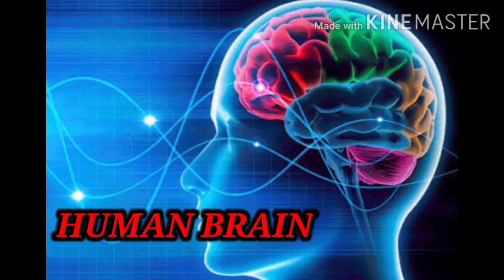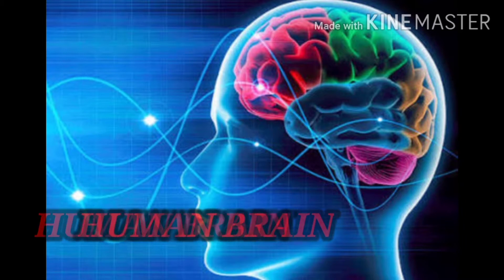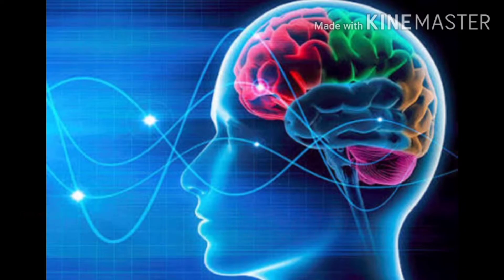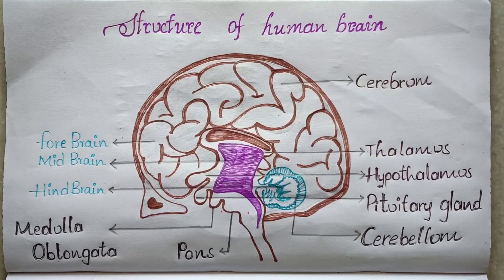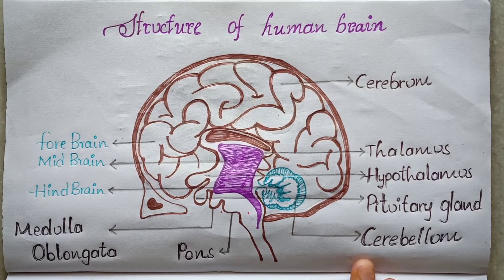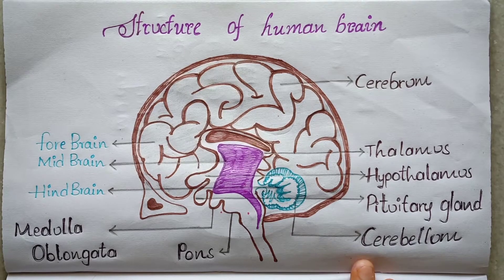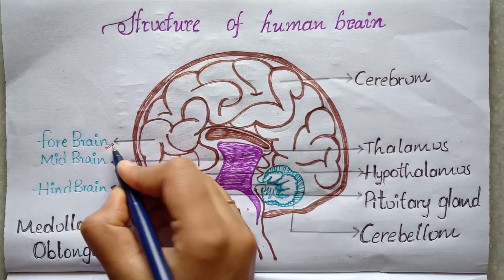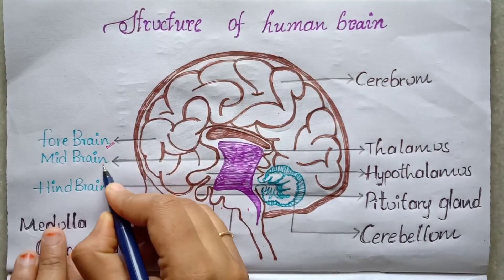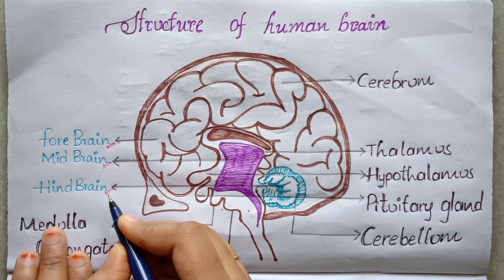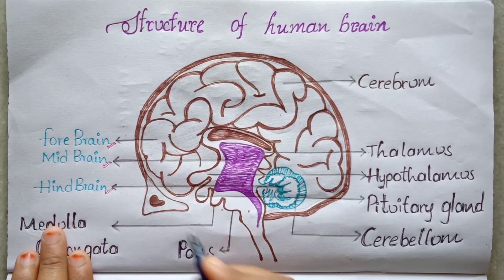The human brain is mainly divided into 3 parts: one is forebrain, midbrain, and the last one is hindbrain. This is the function of the human brain.